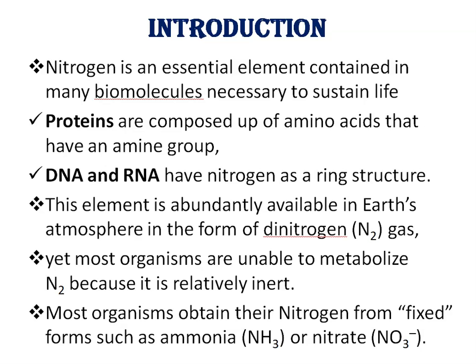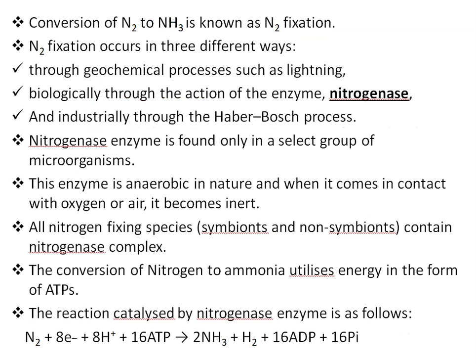Yet most organisms are unable to metabolize nitrogen because it is relatively inert. Most organisms obtain their nitrogen from fixed forms such as ammonia or nitrate. The conversion of nitrogen to ammonia is known as nitrogen fixation. Nitrogen fixation occurs in three different ways: through geochemical processes such as lightning, biologically through the action of the enzyme nitrogenase, and industrially through the Haber-Bosch process. Today we will discuss the structure and mechanism of action of nitrogenase enzyme.